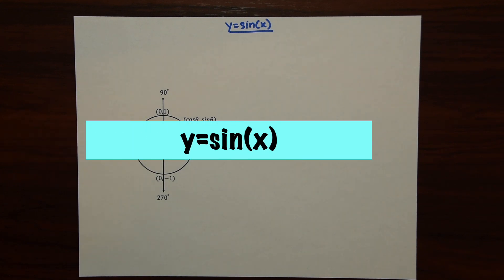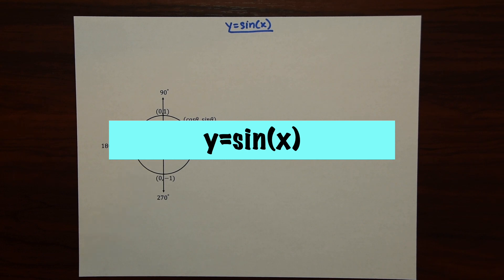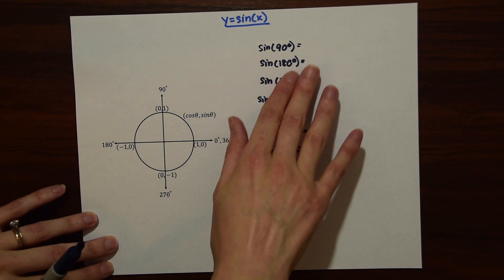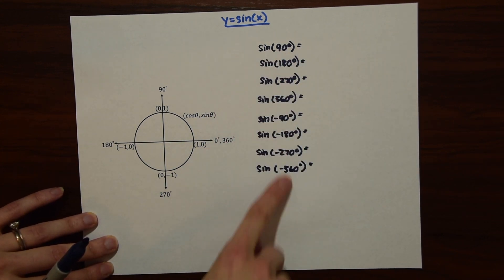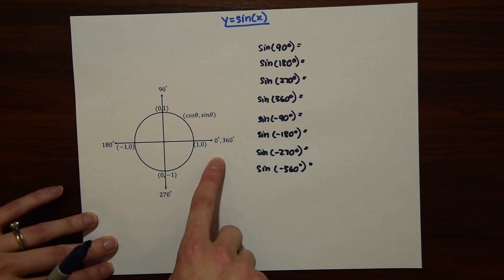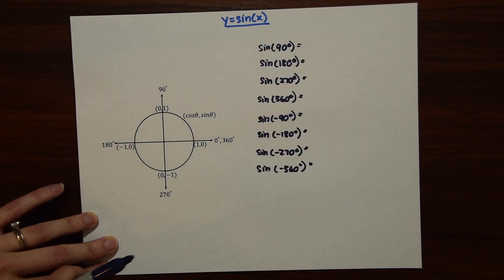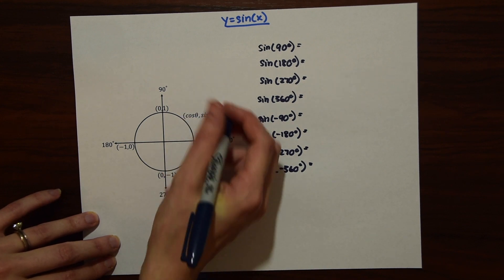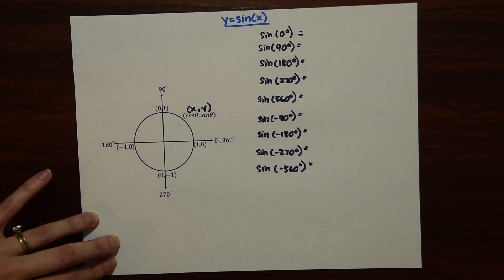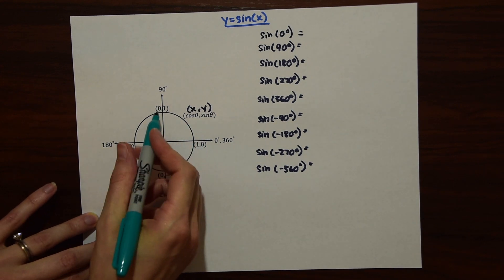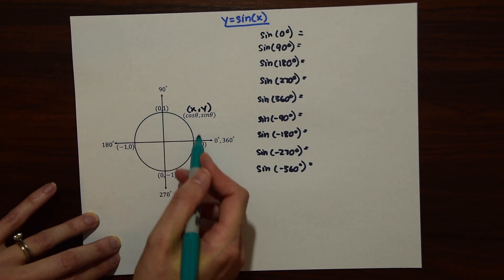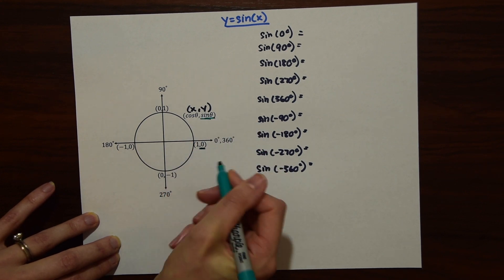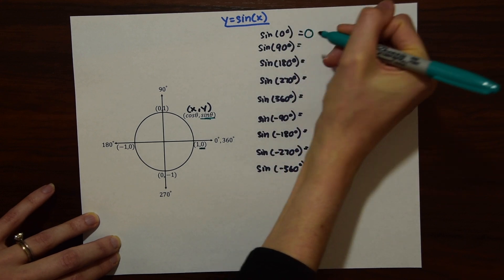The first function we're going to graph is y equals sine of x. We want to find the value of each sine function given different degree values based on the unit circle — these will be our coordinates. If you remember the unit circle, cosine of theta comma sine of theta is really like x comma y. So if we look at sine of 0 degrees, we look at the y value, which is 0. So we know sine of 0 degrees is 0.